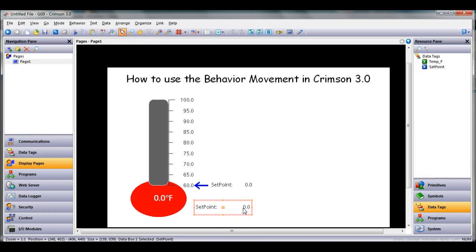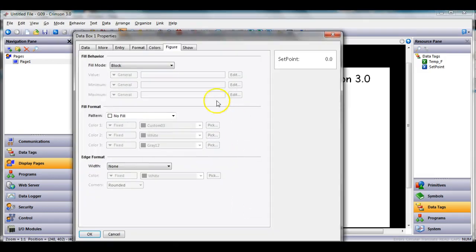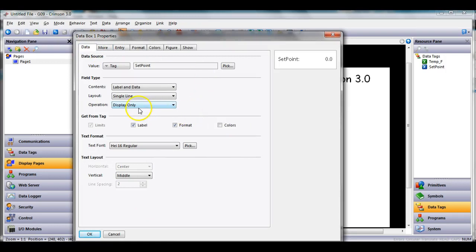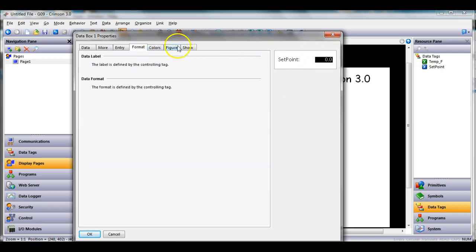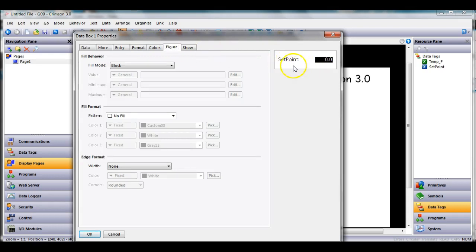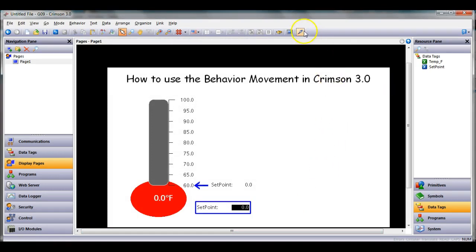I'm going to double click on it, go to the data tab where it says operation, choose data entry. Notice the background color gets inverted. Then I'm going to go to the figure tab, and remember when I teach a class if I have a field that's a data entry, I at least like to give it a border so that the end user knows where to click or tap to get the keyboard to come up. I'm going to give it a blue border three pixels.